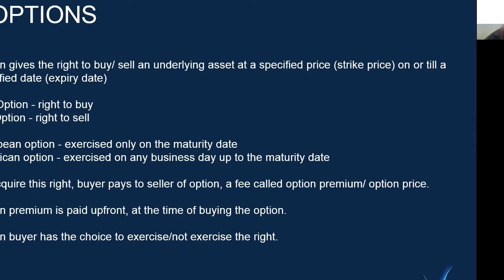There are European options and American options. European options can only be exercised on the maturity date, while American options can be exercised on any business day till the maturity day, including the maturity date. To acquire this right, the buyer of the option has to pay the seller a fee called the option premium or the option price. This fee is paid upfront at the time of buying the option and it is a one-time fee. The option buyer has the choice to exercise or not exercise the right, while the seller of the option is obligated to abide by the choice of the buyer.